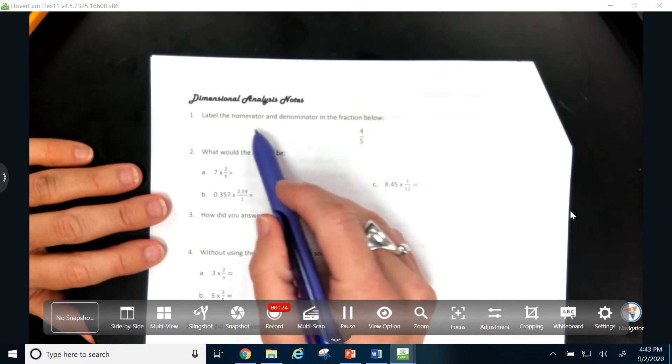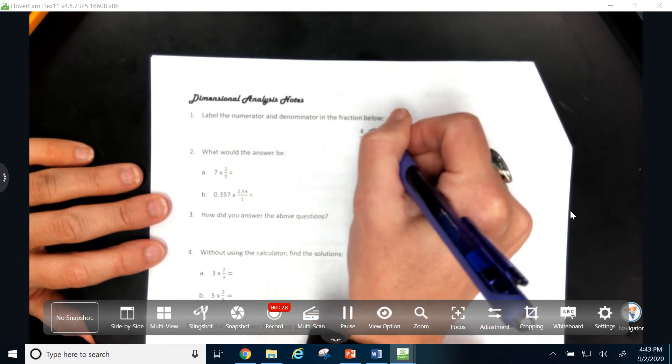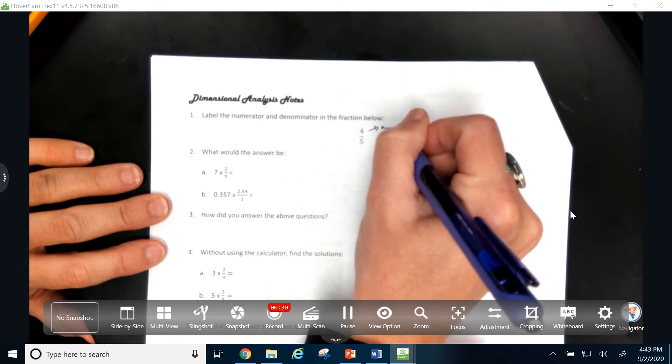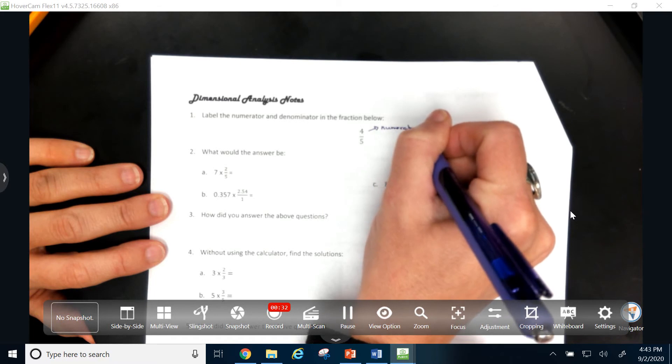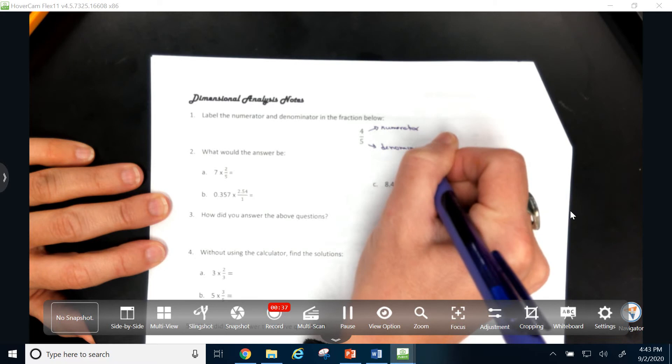So for example, labeling the numerator and the denominator in the fraction below, we should already know how to do that. We know that this is the numerator, and we know that this down here is the denominator. So we already know that from math.